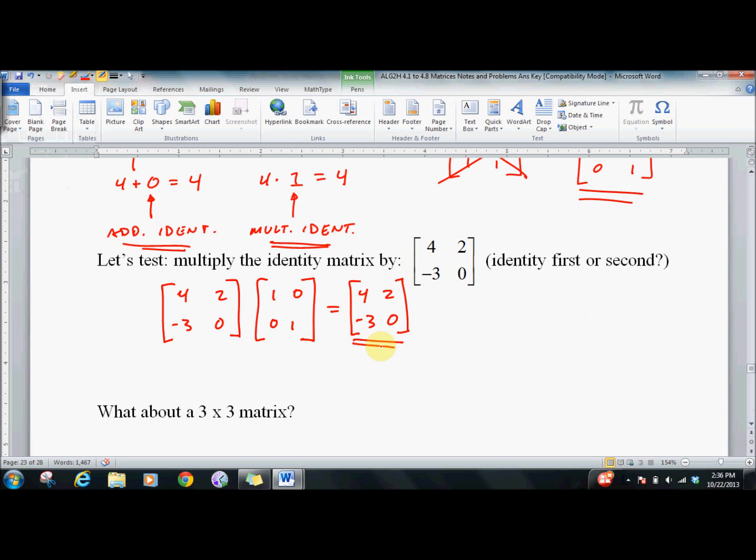Now, it works, but this could cause problems in that we don't know which way to put it. So let's see if it works both ways. Is it first or second? If we do it this way, we get [4, 2; -3, 0]. It works both ways. So this is the identity matrix.